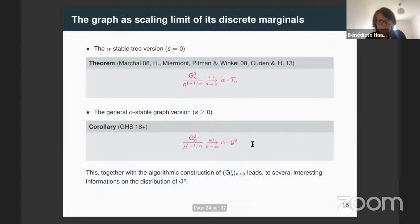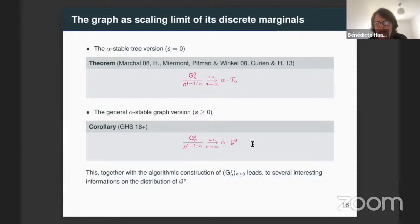Let me do a small parenthesis that will be useful also for the next property I will present. From these discrete marginals, we can re-obtain the continuous graph as a scaling limit. The interesting thing that is new here: if you take the discrete marginal of the alpha-stable tree, it is distributed as a particular Galton-Watson tree conditioned to have N vertices.